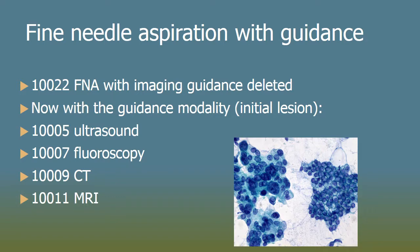Fine needle aspiration with guidance: the FNA code without imaging guidance remains, but the with-imaging-guidance code — 10022 — has been deleted and replaced by codes for the actual imaging modality: ultrasound, fluoroscopy, CT, and MRI. The codes shown here are for the initial lesion FNA biopsy, and there is an additional code for an additional lesion biopsy — not an additional needle pass.